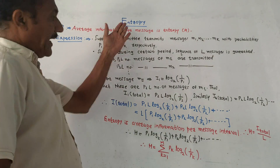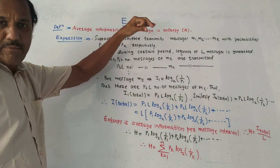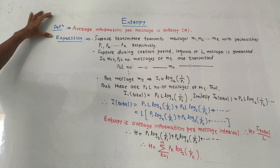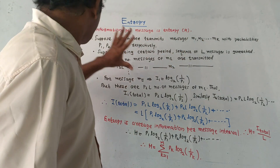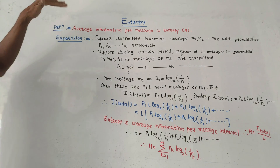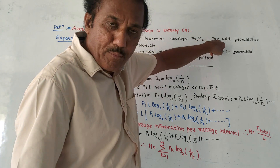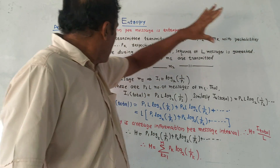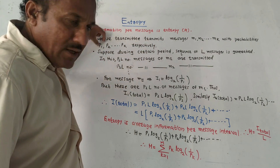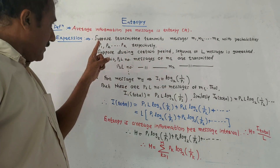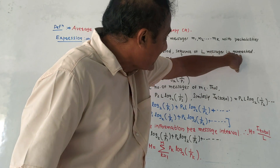Next is entropy. From the exam point of view, a question may ask: define entropy and prove its mathematical expression. The definition: average information per message is called entropy, and it is denoted by capital H. Suppose a transmitter is generating messages m1, m2, up to mk with probabilities p1, p2, up to pk. After a long time period, a sequence of L messages are generated.